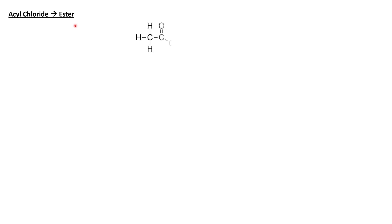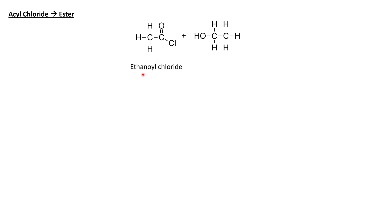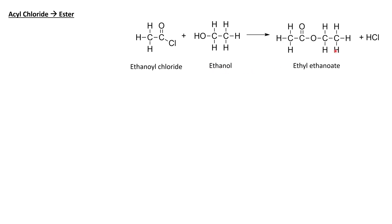Now let's look at how acyl chlorides can be converted to esters. Here I've got the same acyl chloride, ethanoyl chloride. Just like you would normally make an ester by reacting a carboxylic acid with an alcohol, all you need to do with acyl chlorides is react them with alcohols. So we'll take ethanoyl chloride, react it with ethanol, and this will produce ethyl ethanoate and hydrogen chloride fumes.